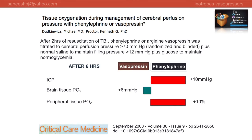A study published in Critical Care Medicine in 2008 evaluated phenylephrine versus vasopressin, titrated to cerebral perfusion pressure above 70 mmHg. After 6 hours, it was observed that the increase in ICP was greater with phenylephrine, so the vasopressin group scores here. Brain tissue PO2 was better maintained in the vasopressin group, though peripheral tissue PO2 was compromised in the vasopressin group.